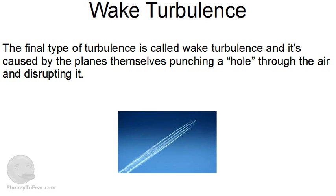The final type of turbulence is called wake turbulence and is caused by the planes themselves punching a hole through the air and disrupting it. Of course the plane doesn't actually create a hole, but it's a good way to imagine what happens to the air as it's moved apart by the plane and then comes back together, much like the water in the river. Wake turbulence is usually only a problem near airports, and it's much more of a problem for light aircraft following heavy ones than it is for commercial airliners. The simple solution to wake turbulence is that air traffic control keeps planes well apart, which allows the turbulence to dissipate.